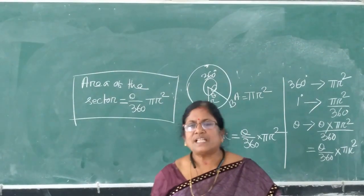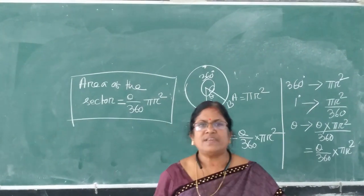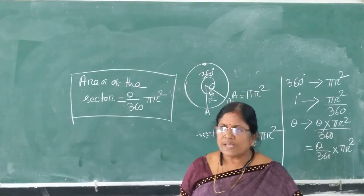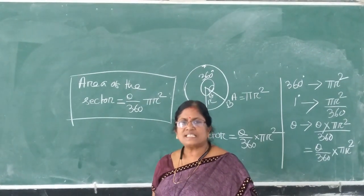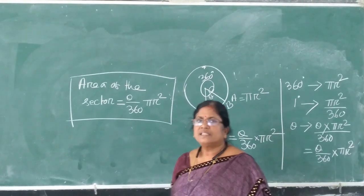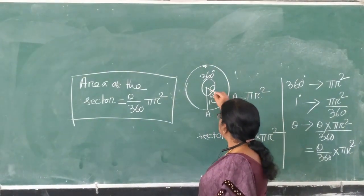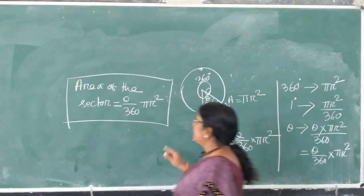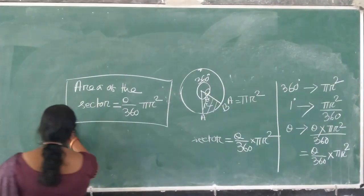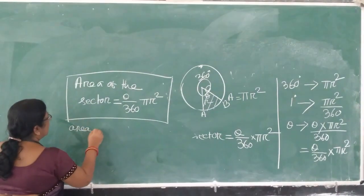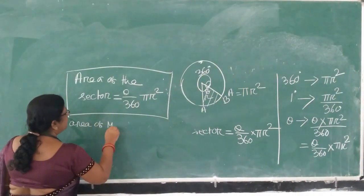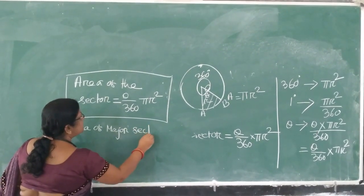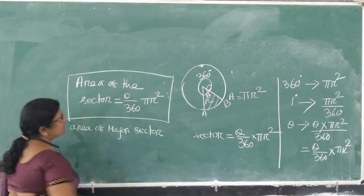So students, if in the question it is given to find the area of the sector, always you assume that is given to find the area of the minor sector. Similarly, what is the area of the major sector? Area of major sector equals pi r square.